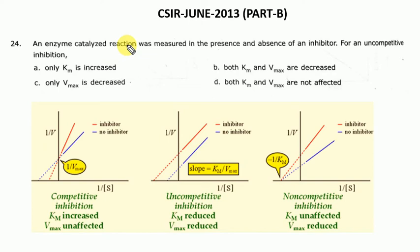An enzyme-catalyzed reaction was measured in the presence and absence of an inhibitor. For uncompetitive inhibition, the options are: only KM is increased; only VMAX is decreased; both KM and VMAX are decreased; or both KM and VMAX are not affected. If you haven't studied inhibition kinetics, refer to the graph. In competitive inhibition, KM is increased and VMAX is not affected.